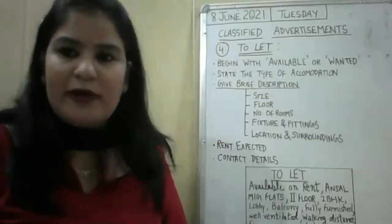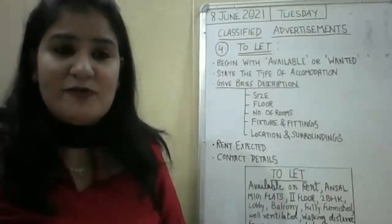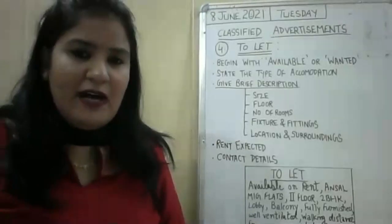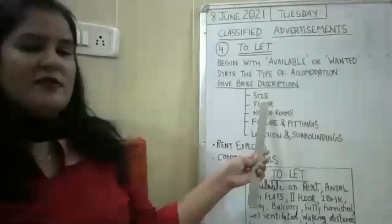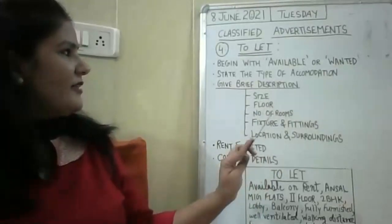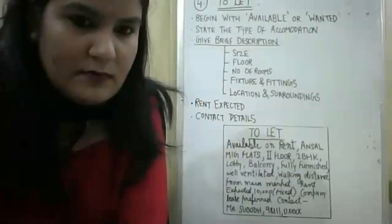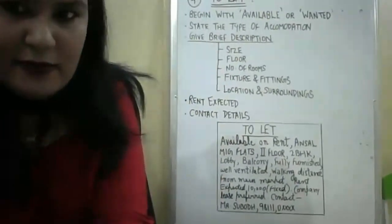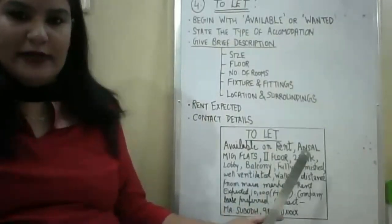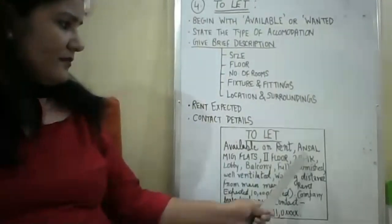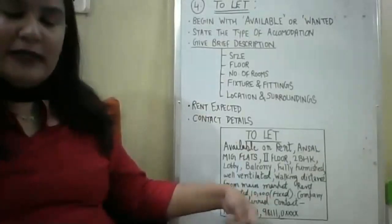They have asked you to mention location of the building, nature of accommodation — whether it is personal property or commercial — and rent expected. You can add fitting and fixtures, number of rooms, size and floor. Now, here is one example. The heading would be: To Let. Then: Available on Rent — because you are going to give it, so you write 'available on rent.' Then you mention the name: for example, 'Ansel MIG Flats' — you can write any name like Green Avenue Flats or Evergreen Flats. Remember: you are not supposed to use sentences in classified advertisements — always use phrases and words only.